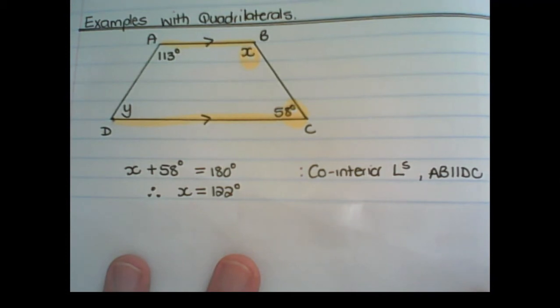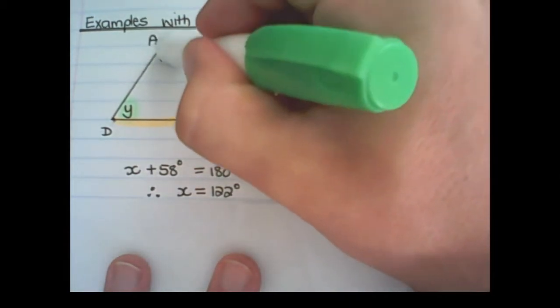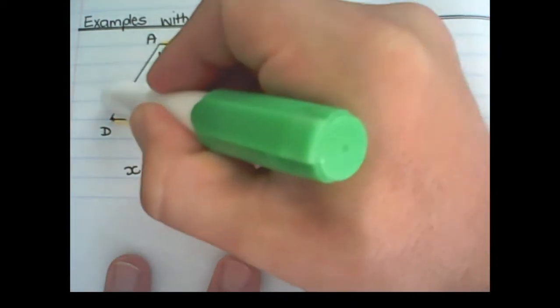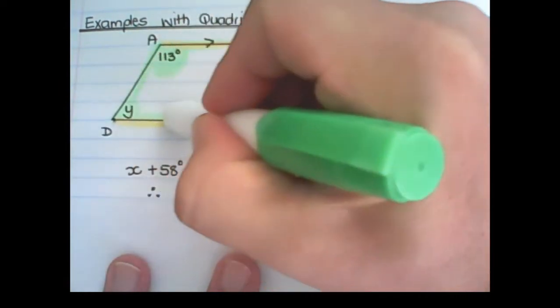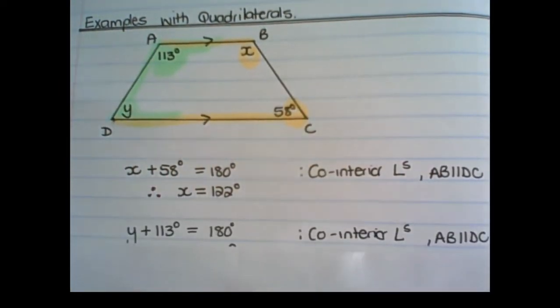Next we have Y. So Y plus 113 would also be equal to 180 degrees. And the reason again is co-interior angles, with the line AB parallel to the line DC.